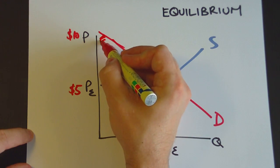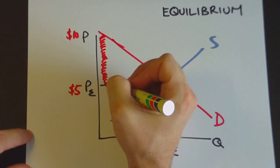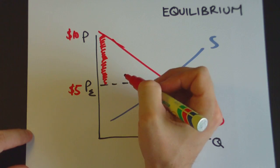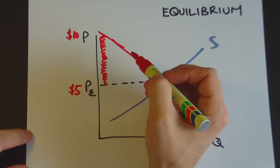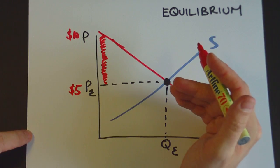So effectively they get this area of surplus. They were willing to pay $10 but they only had to pay $5. And they're pretty happy about that because now they can go and instead of just buying the good with $10 they can buy the good and they can also buy a cup of coffee as well.